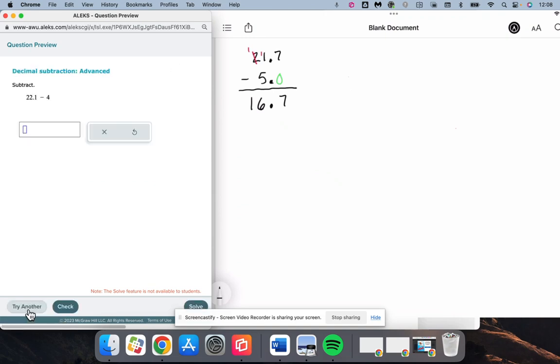And 22.1 minus 4, recognizing the decimal would fall after the 4. And if you would like, you can put a 0 there.